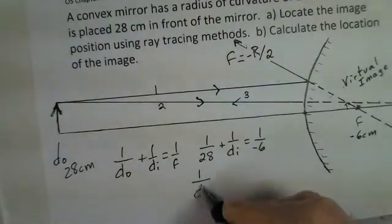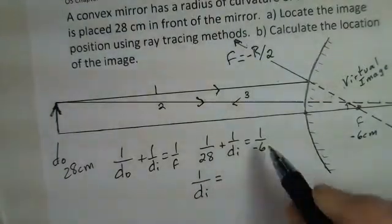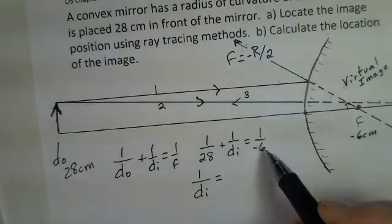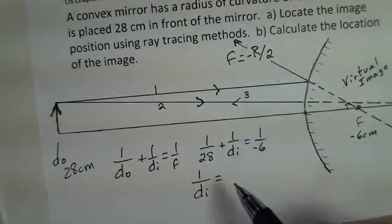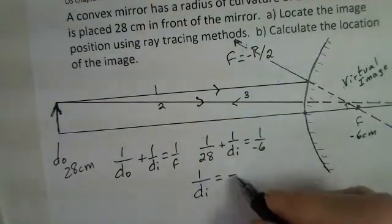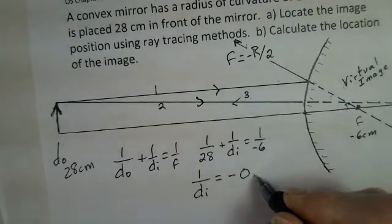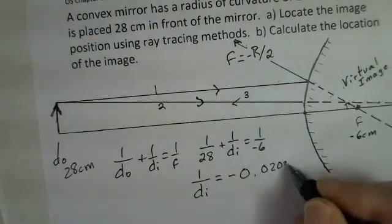Welcome back. 1/di is going to be -1/6 - 1/28. And I came up with -0.0202381.